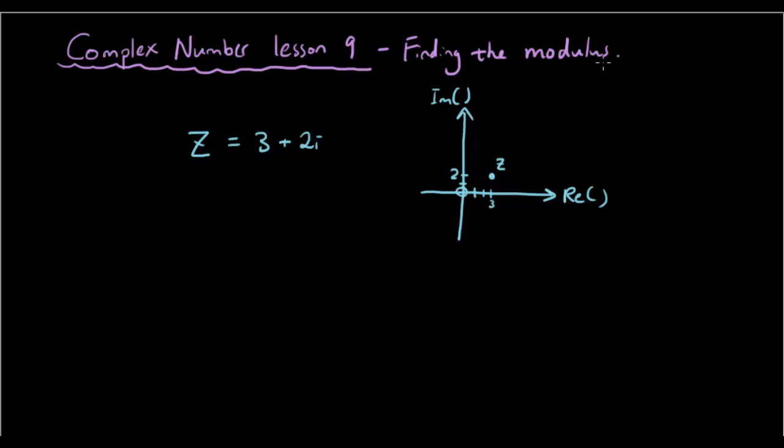Now, the modulus of this complex number basically is the length of the line joining the origin and the point z. So if I draw a straight line from where the origin is to this point, then the length of this line is the modulus.